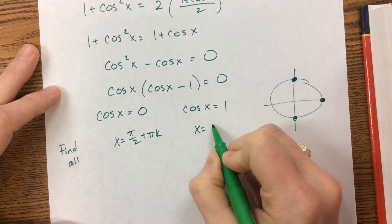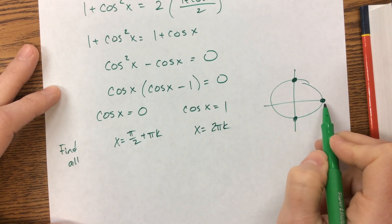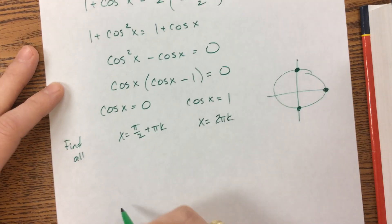And then I would say here x equals 2π k, because it's 0 plus 2π k, so it's just 2π k is the easiest way to do it.